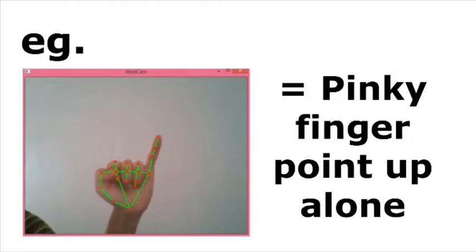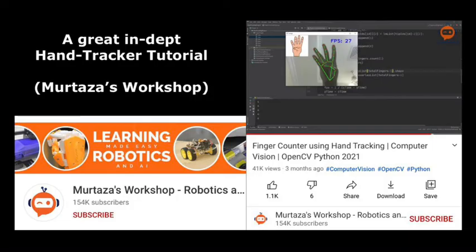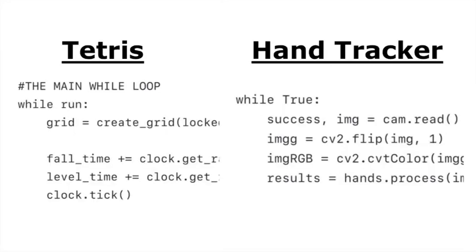We can then examine the position of these points relative to each other to see what hand gesture is on the screen. Combining the two, both the game of Tetris and the hand-tracker run on a main while loop. The idea is to combine these two while loops together into one.